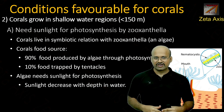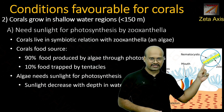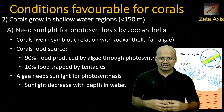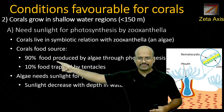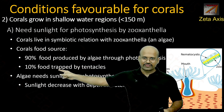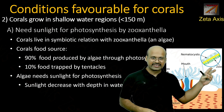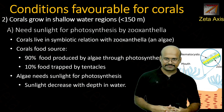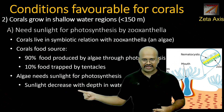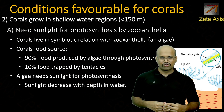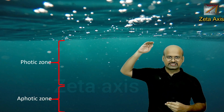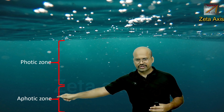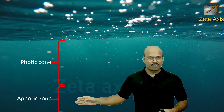Corals require sunlight for photosynthesis because they have zooxanthellae — algae — living in their tissues. These zooxanthellae perform photosynthesis and provide up to 90% of the coral's food. Photosynthesis is impossible without sunlight, and as we go deeper in the water the amount of sunlight decreases. The upper layer is the photic region where sunlight is available, while below that is the aphotic region which is completely dark.